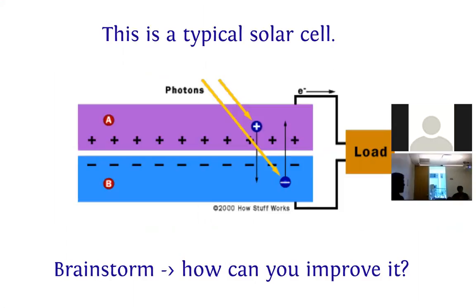Let's first think about what a solar cell is. A typical solar cell looks like this: it has a p-n junction, so it's a p-type semiconductor right next to an n-type semiconductor, and it is usually reverse biased.